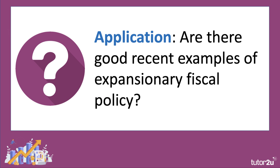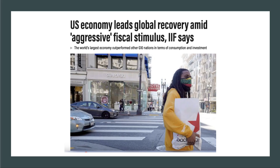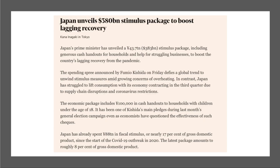Looking at recent examples of expansionary fiscal policy: the IMF published a report saying that growth in the United States during 2021 had been supported by what they called aggressive fiscal stimulus, including direct COVID checks paid into the bank accounts of millions of households, which gave them extra spending power. I was also interested to read this article in the Financial Times recently: Japan unveils a $380 billion stimulus package to boost lagging recovery.